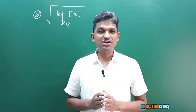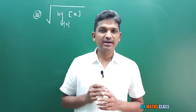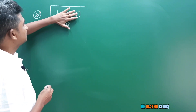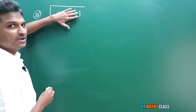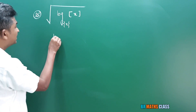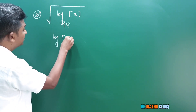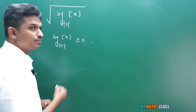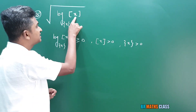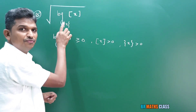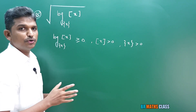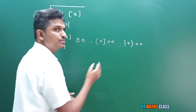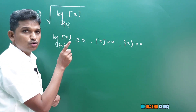This is an interesting and slightly difficult question. There is a square root, so the expression inside must be greater than or equal to 0. We write: log_{⌊x⌋}({x}) ≥ 0. Logarithm is defined for positive real numbers only, so step x must be greater than 0, fractional part of x must also be greater than 0, and the base value cannot equal 1.